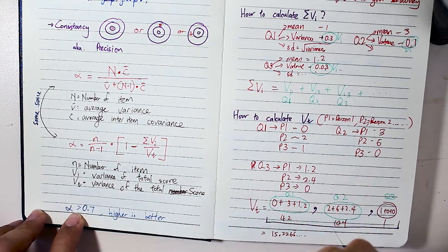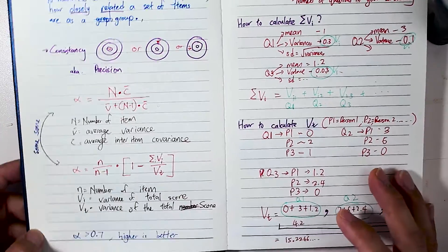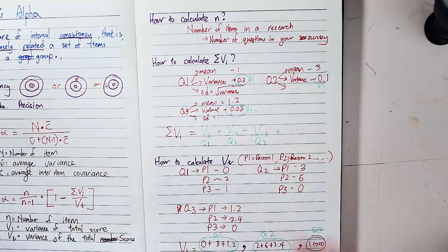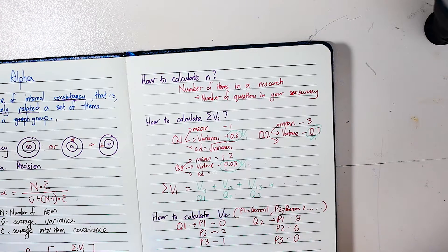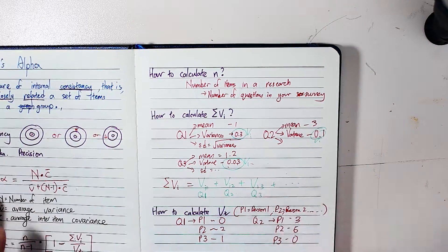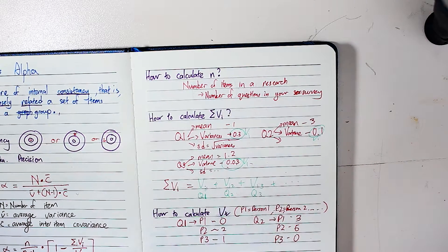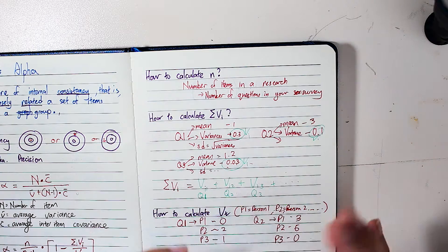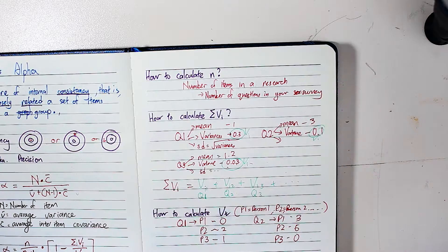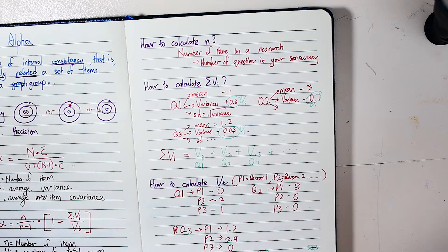As long as your alpha is 0.7 or higher, that's generally considered good. If you just want to run it in SPSS, this video is not for you — I'll recommend other videos in the description. The first thing we need to know is how to calculate n. n is the number of items, which in this case is the number of questions in your survey. If your survey has 25 questions, n equals 25 — simple as that.